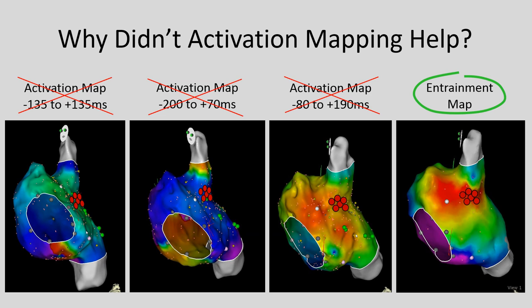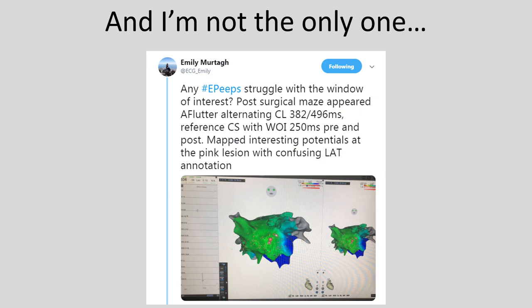Over time, talking to my colleagues and my Twitter friends, I quickly discovered that I was not the only one who had had cases like this. Here is just one example of somebody sharing a map where they were figuring out the most appropriate window of interest, because the effective lesions were not at all in the location where the earliest spot was identified on activation mapping. There was clearly an unmet need that I wanted to address by creating this presentation.